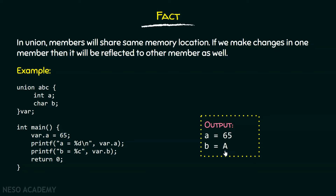You might be wondering why we get capital A. a equals 65 is okay, but b is a character. We know that in union, both members share the same memory location, so 65 is also shared by character b. We know that the ASCII code of capital A is 65, so var.b will be capital A when printed as a character. Therefore, capital A gets printed.